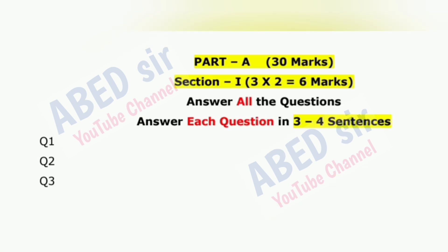Part A has 3 sessions. In Session 1, very short questions will be asked. A total of 3 short questions will be asked, and you have to answer all 3 questions. Each one carries 2 marks, so 3 times 2 is 6 marks you will get from Session 1.